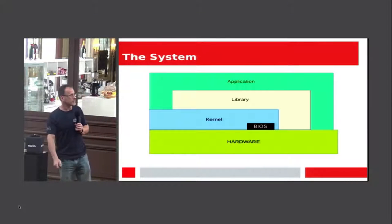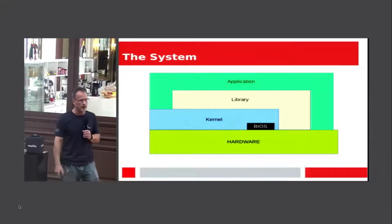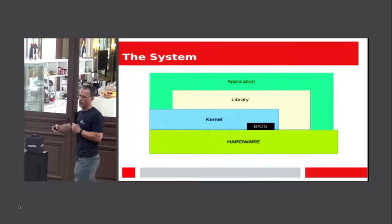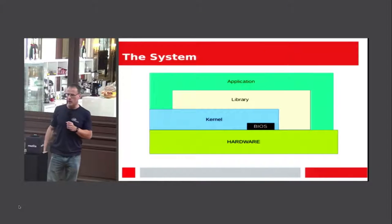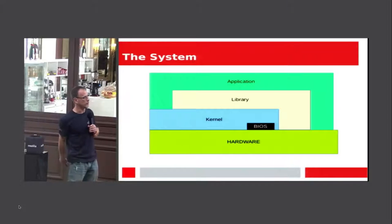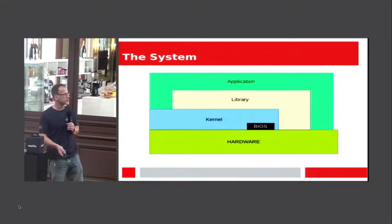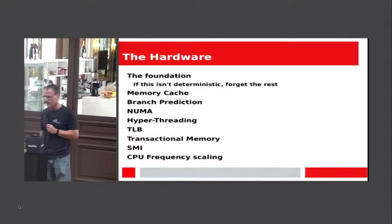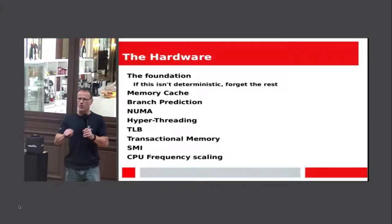Inside the system you have the application on top, your library infrastructure, your kernel infrastructure, your BIOS or firmware, and then the hardware. Every one of these things has to be real-time aware if you want a real-time system. Applications can sometimes skip through the libraries and even the kernel to talk directly with the hardware. So going with the hardware first — this is the foundation. If the hardware isn't real time, the rest of the system will not be real time.